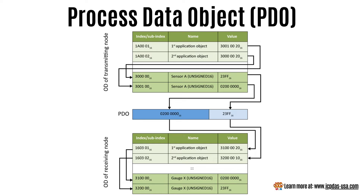PDO, which stands for Process Data Object, is used to transmit real-time operational data between devices in a CANopen network. It is more efficient than SDO for sharing large datasets and is crucial for most CANopen communication. The PDO is often seen as an essential CANopen protocol as it carries the bulk of information, and is used for broadcasting high-priority control and status information in real-time across CANopen nodes.